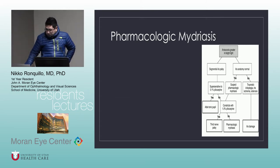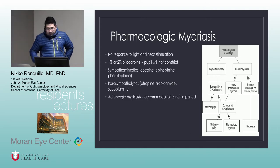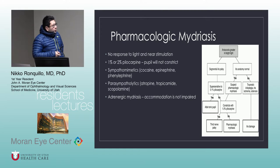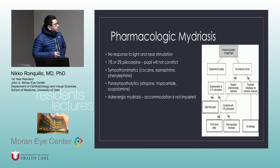For pharmacologic mydriasis, there is no response to light or near stimulation. One or two percent pilocarpine will not constrict pupils that are pharmacologically dilated. Even segmental iris palsy is not super sensitive to 0.1% pilocarpine or one to two percent. Sympathomimetics include cocaine, epinephrine, and phenylephrine. Parasympatholytics include atropine, tropicamide, and scopolamine. An important point for adrenergic mydriasis is that accommodation is not impaired.